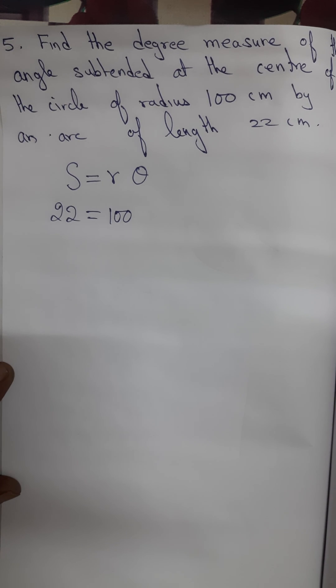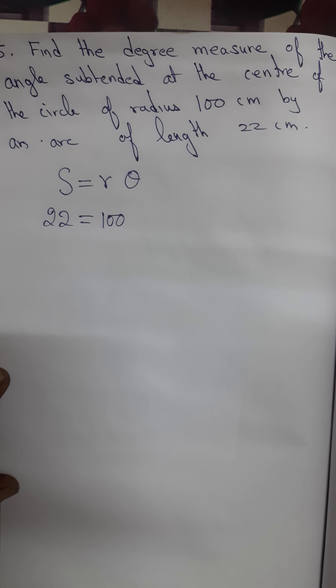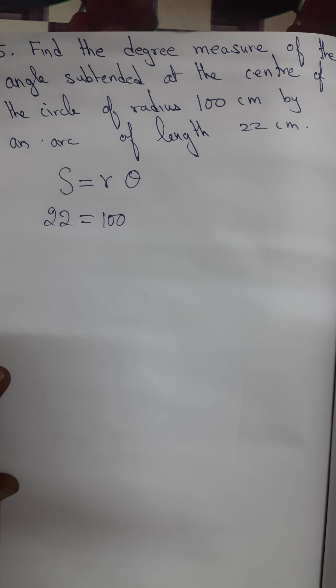Exercise 3.2 question number 5. Find the degree measure of the angle subtended at the center of the circle of radius 100 cm by an arc of length 22 cm.